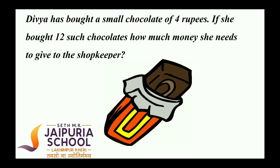Let's read the problem. Divya has bought a small chocolate of 4 rupees. If she bought 12 such chocolates, how much money does she need to give to the shopkeeper?